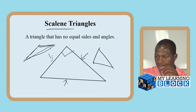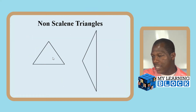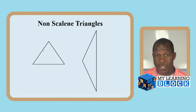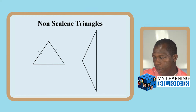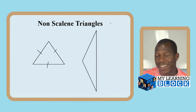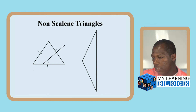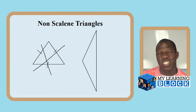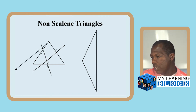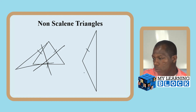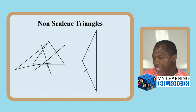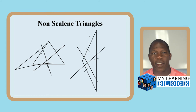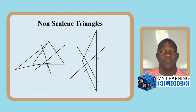Examples of non-scalene triangles: this equilateral triangle has all sides the same — all equal — therefore it is definitely not a scalene triangle. This isosceles triangle on its side has two equal sides, which makes it an isosceles triangle and not a scalene. We're looking for a triangle with three sides that are three different lengths.